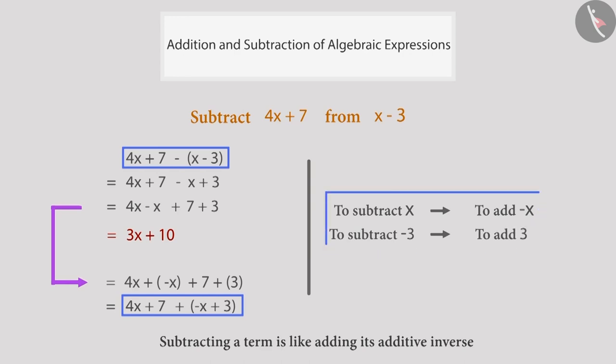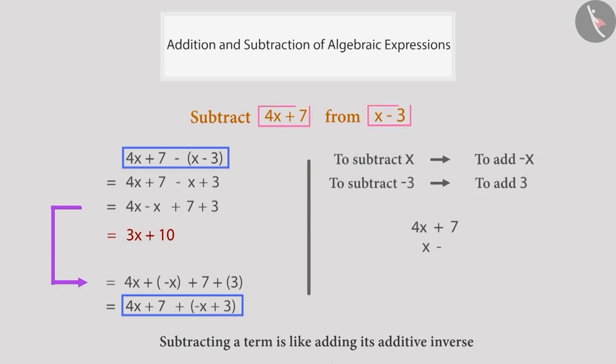This leads us to a simpler way of doing the subtraction. We can subtract these two expressions by placing them one below the other. When we do subtraction in this way, every expression is written in a different line in such a way that the like terms are one below the other in the same column. Notice that we have changed the sign of all the terms of the second expression, because we just saw that subtracting a term is like adding its inverse.